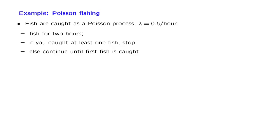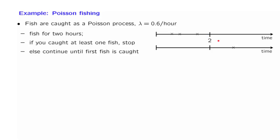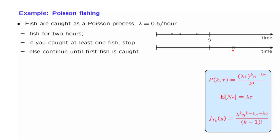You will fish for two hours no matter what. And if during those two hours you have caught at least one fish, then you stop — as in the scenario in which you caught three fish during the first two hours. Otherwise, you will continue until you catch one fish, and at that time you will stop. We will answer a few questions and write down the answers in terms of the notation that we have introduced.